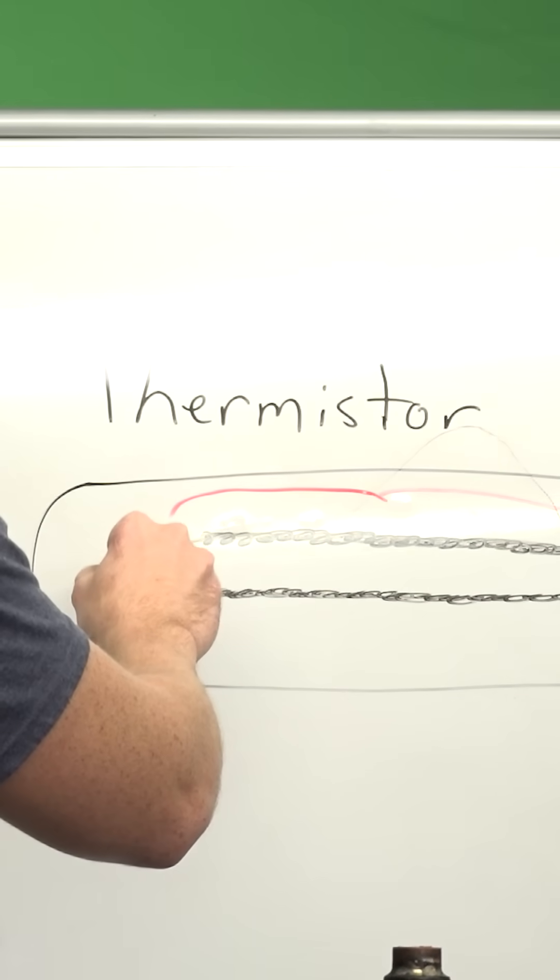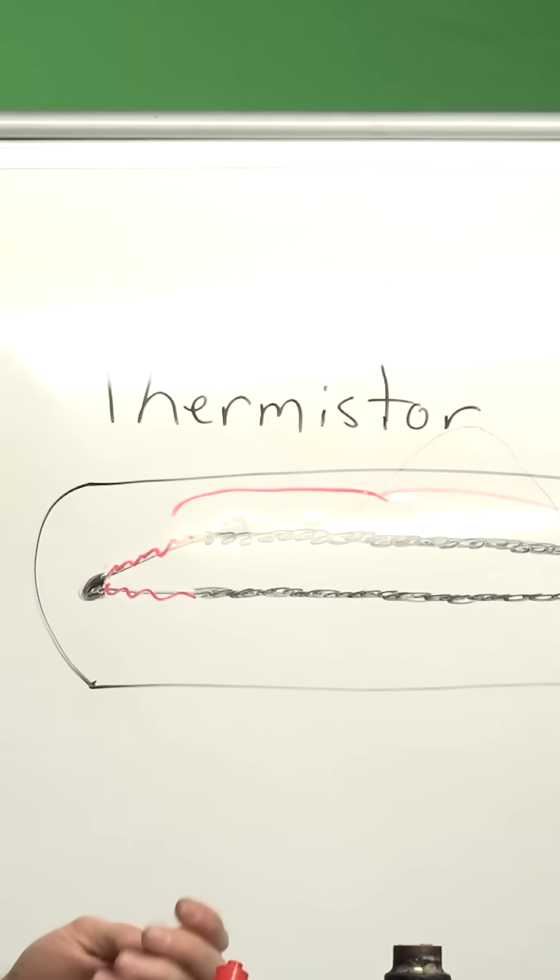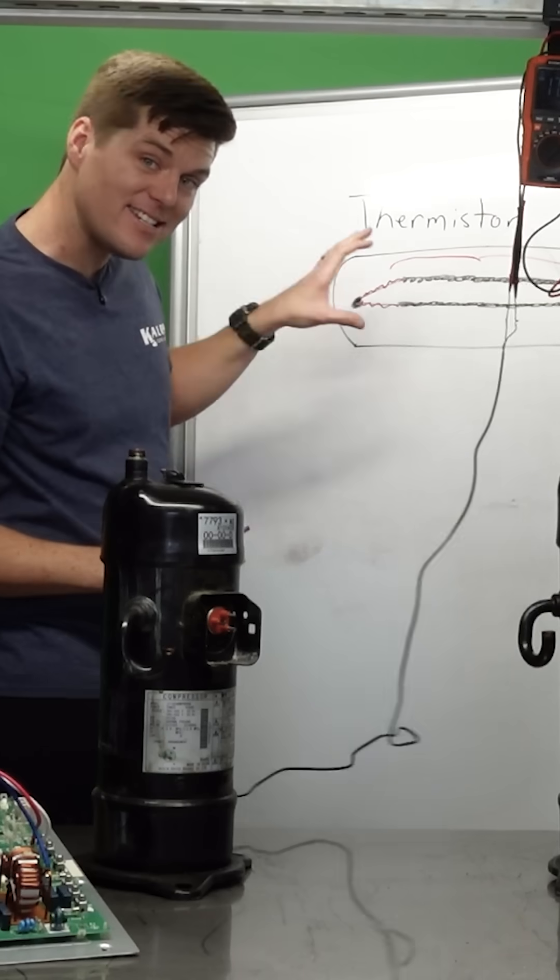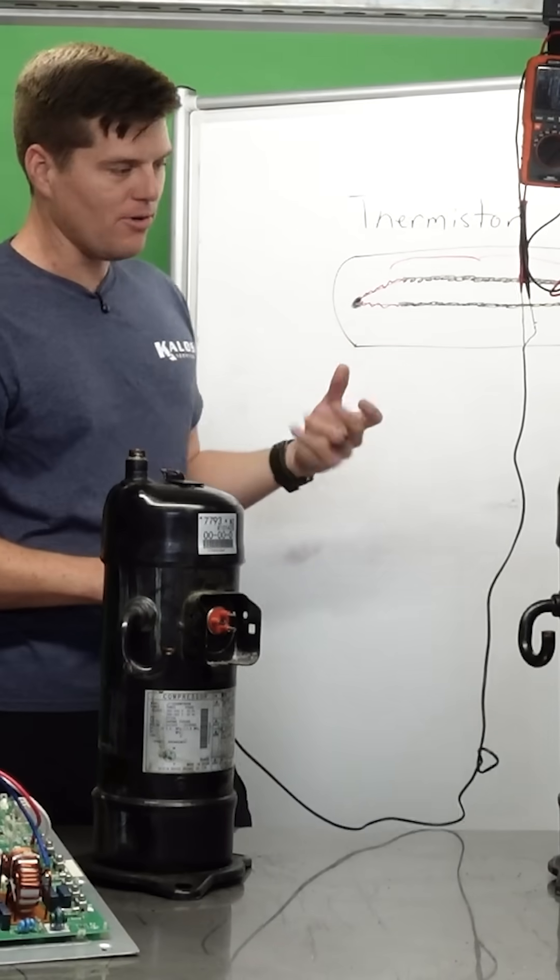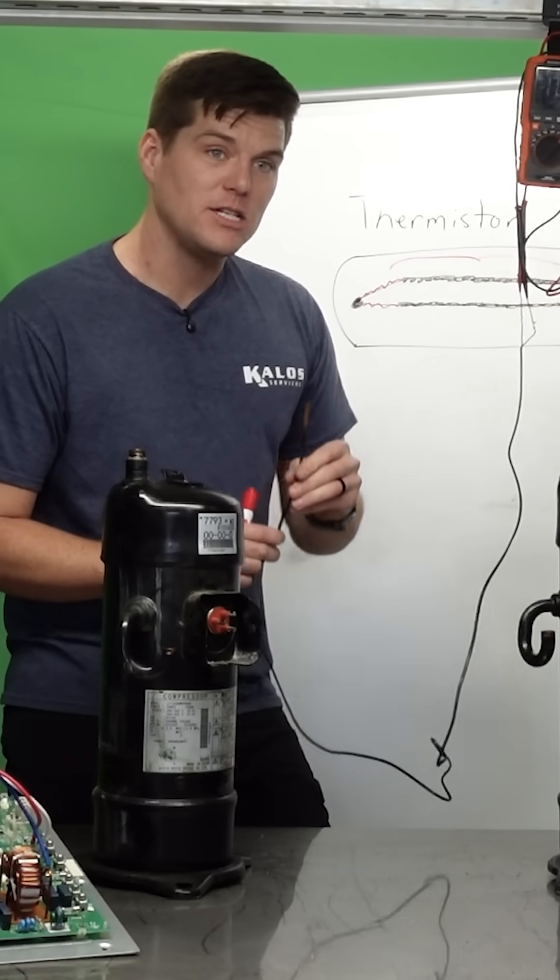When moisture gets inside, it builds up corrosion on these wire metal leads between the actual thermistor and it adds resistance to the circuit. Well that doesn't sound terrible, but the problem is that these are designed to read a specific resistance at a specific temperature.